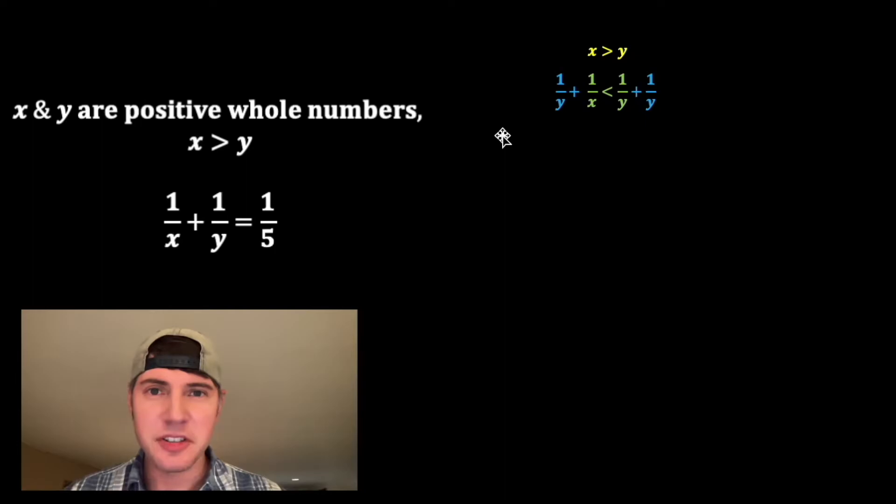Next, I'm gonna add 1 over y to both sides. So since we're just adding to both sides, we know the sign is not gonna change. And then 1 over x plus 1 over y, we know that's equal to 1 fifth because of this up here. And then 1 over y plus 1 over y is 2 over y. Another way to think of this would be like 1 fifth plus 1 fifth is 2 fifths. 1 over y plus 1 over y would be 2 over y.